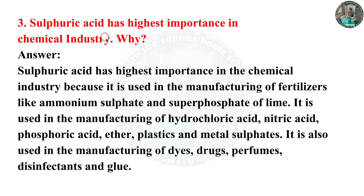Why does sulfuric acid have the highest importance in the chemical industry? Sulfuric acid has the highest importance in the chemical industry because it is used in the manufacturing of fertilizers like ammonium sulfate and super phosphate of lime.